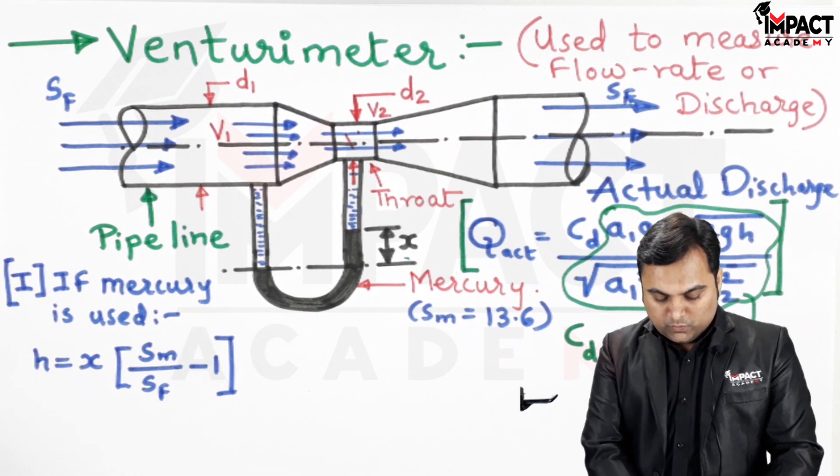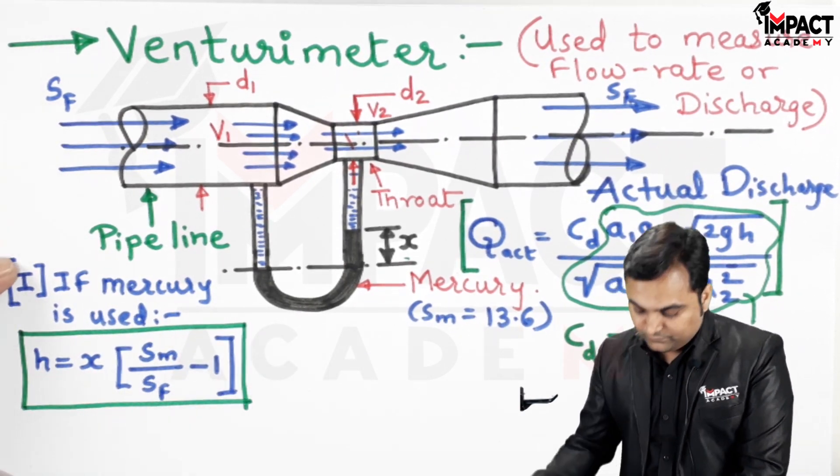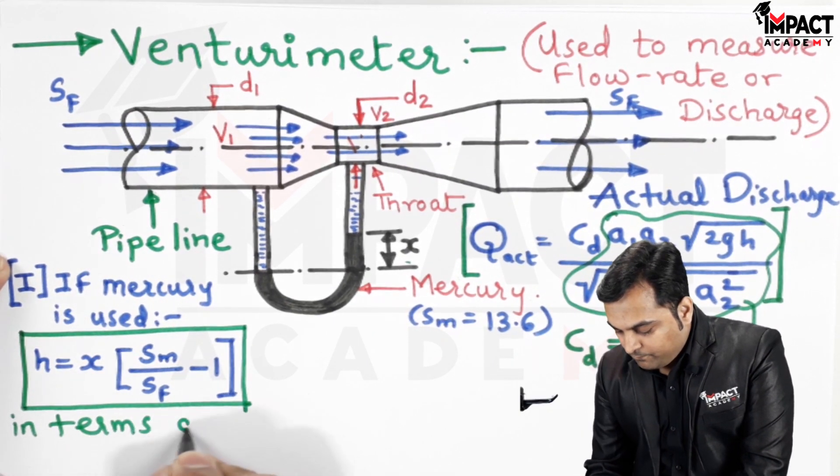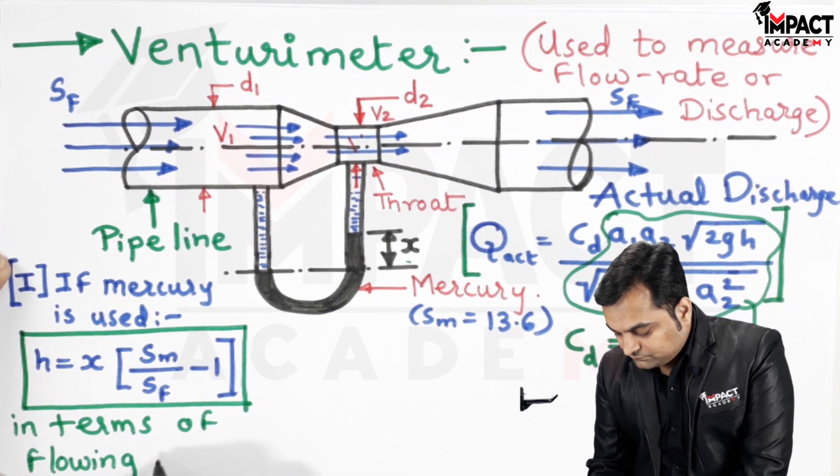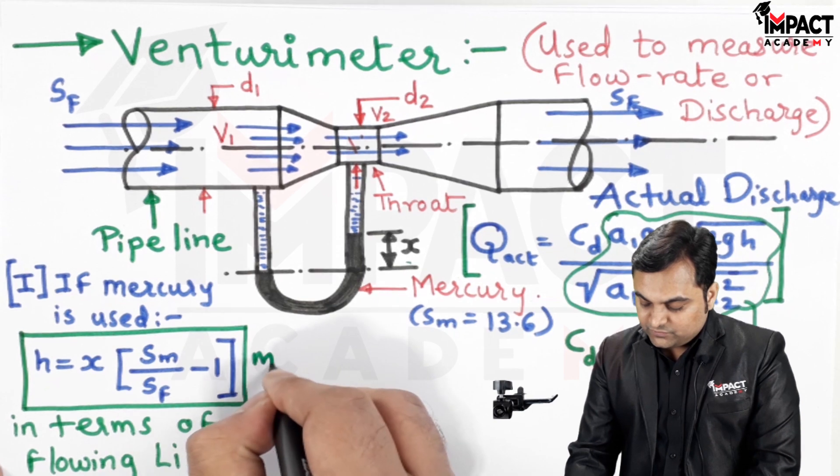By this formula we can get H, and that H will be in terms of the flowing liquid, unit would be in terms of meter.